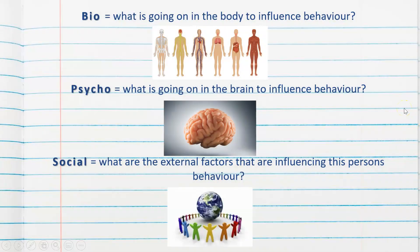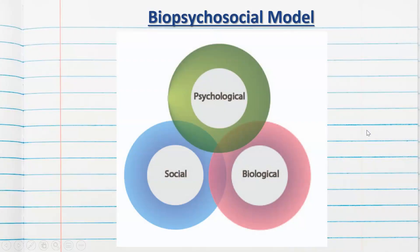To summarize: for bio, ask what's going on in the body — chemically and biologically — to influence behaviour. For psycho, ask what's going on in the brain — the cognitive and psychological factors influencing behaviour. For social, ask what external factors are influencing this person's behaviour: who are they around, where are they, what's going on external to the self? We need to look at all three aspects together. If we only focused on, say, the psychological, we could miss key biological or social information that helps us determine what's influencing someone's behaviour.